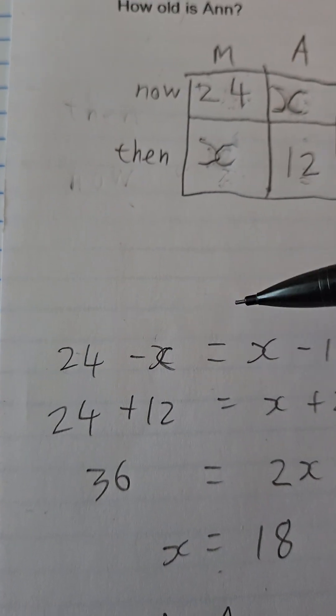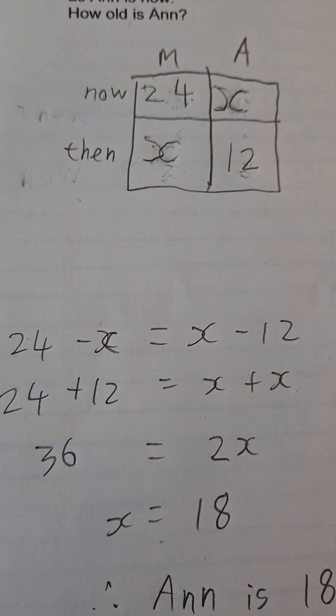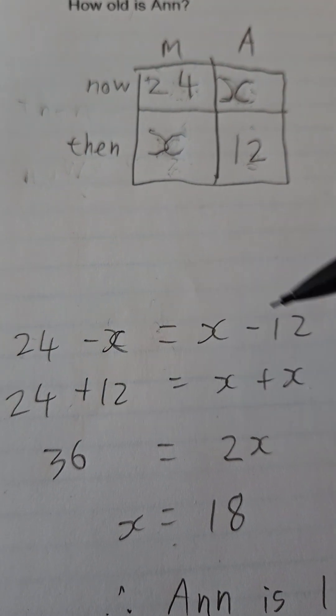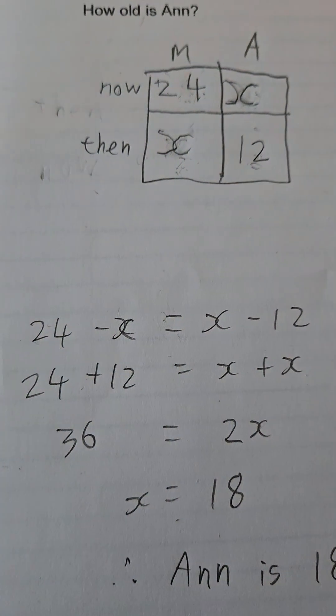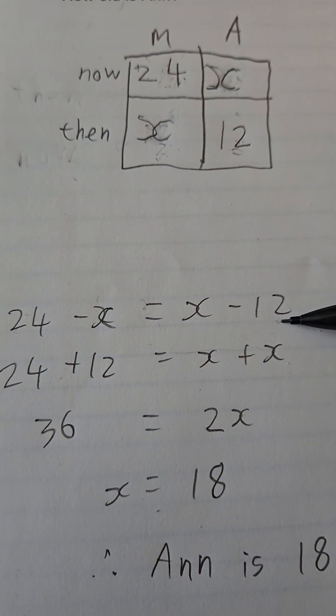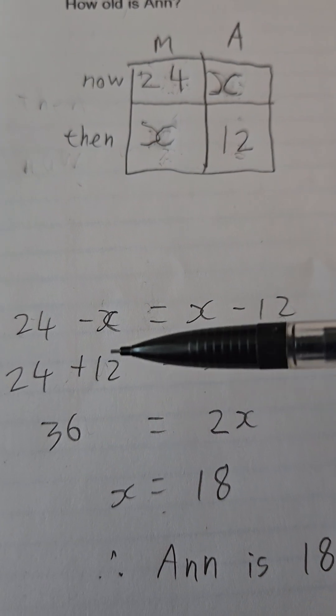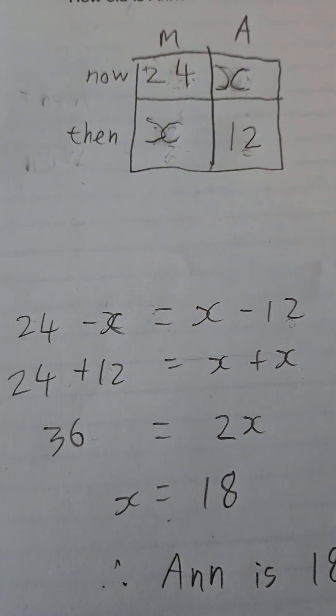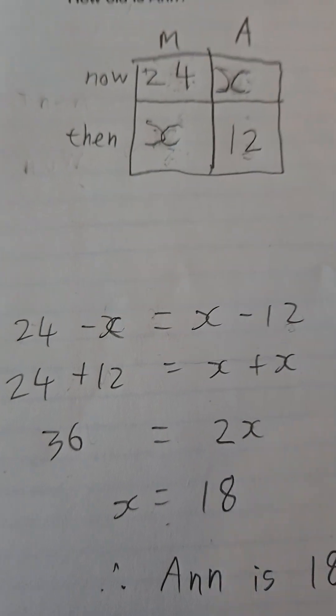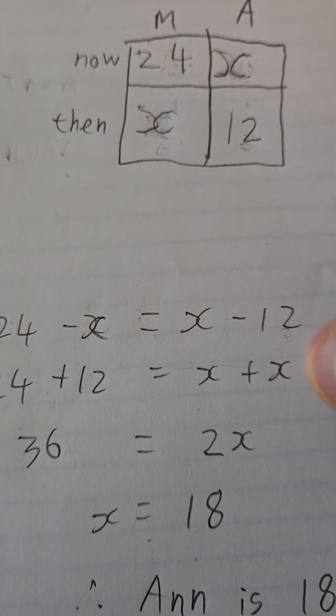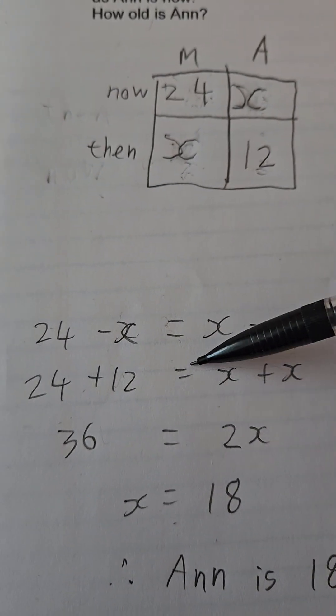24 minus x equals x minus 12. This is an equal sign. What I do to one side I do to the other. It's like a balancing scale. If the right side goes up by 12 and the left side goes up by 12, it will still balance. I add on x here which means that minus x will disappear. I add on x here. That equal sign is still true.